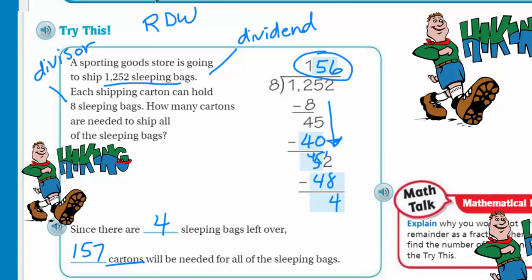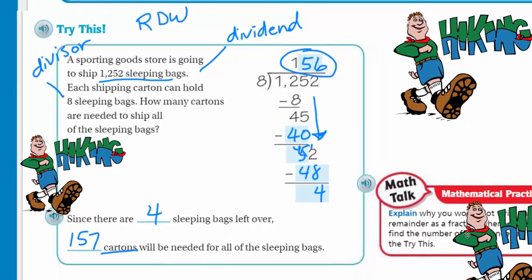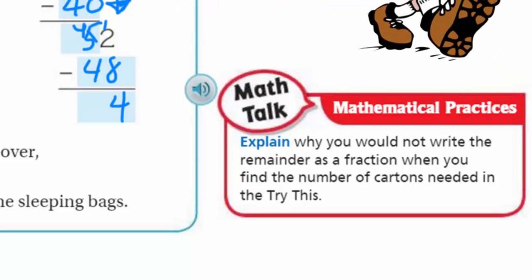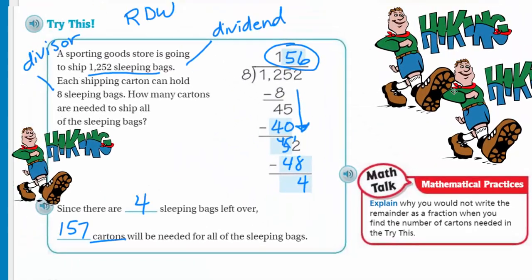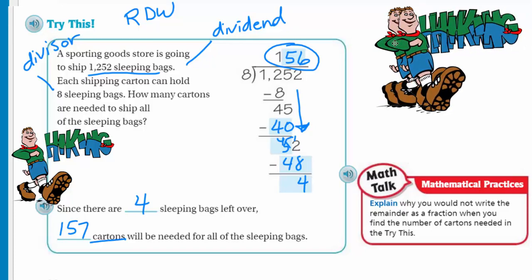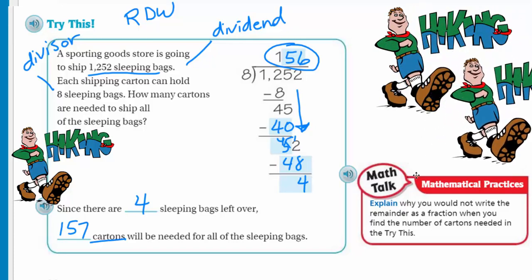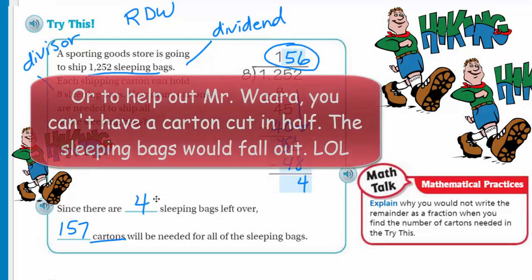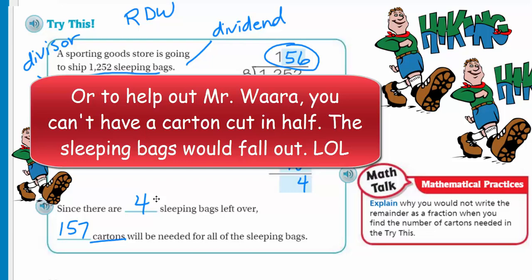Explain why you would not write the remainder as a fraction when finding the number of cartons needed. The reason is we wouldn't write this as a fraction because these are whole cartons holding sleeping bags. It's not like distance or time — these are full cartons. Either you have 8 to make it full or you don't. So we add one to the quotient instead of writing the remainder as a fraction.